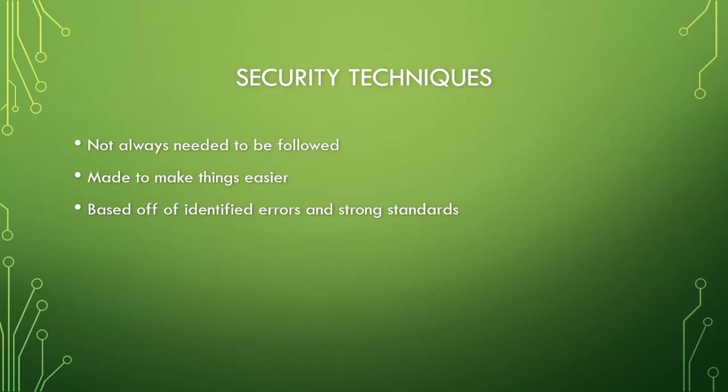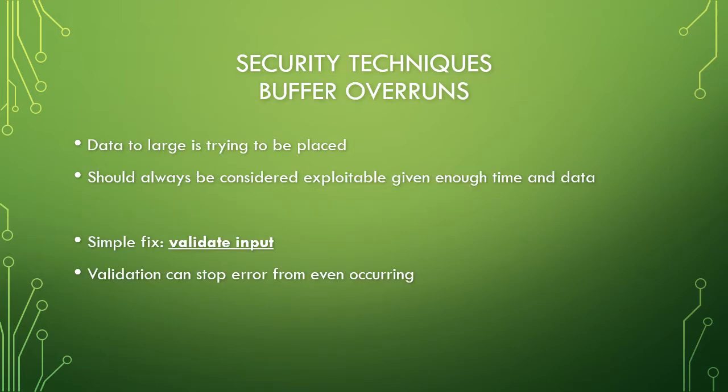Moving forward, we have some security techniques that will really make code secure. They don't always need to be followed, but they really make things easier for coding overall and are based off some of the identified errors and strong standards we went through. The first one is buffer overruns — this is when a large amount of data is placed in a space that can't hold it, and these should always be considered exploitable if given enough time or data. The simple fix is to validate input: if you validate input, the user is not inputting directly into your program. It gets checked, and if there's a problem with what they're entering, it can be stopped before it even gets put into whatever data structure you're using.